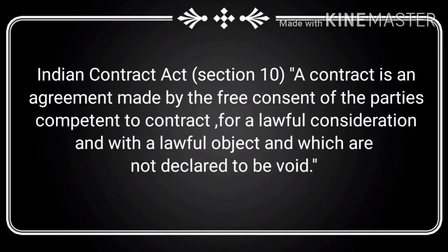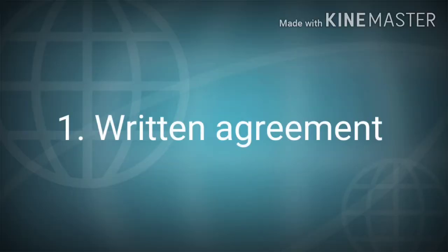As per the above definition, insurance is a contract as it has the following features. The first one is a written agreement. Insurance is an agreement in written form; such a written agreement is called an insurance policy. While making this agreement, the insurer makes an offer on a printed proposal form and the insurance company gives its acceptance in the form of a notice of acceptance.